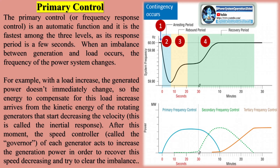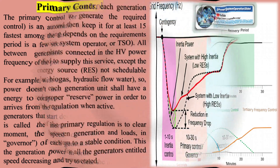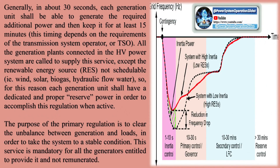Frequency variations in a power system occur because of an imbalance between generation and load. When the frequency value of a power system reaches the emergency condition, the control strategy is initiated. The frequency control is divided in three levels: primary, secondary, and tertiary controls. Each frequency control has specific features and purposes. Primary control, or frequency response control, is an automatic function and it is the fastest among the three levels, as its response period is a few seconds.